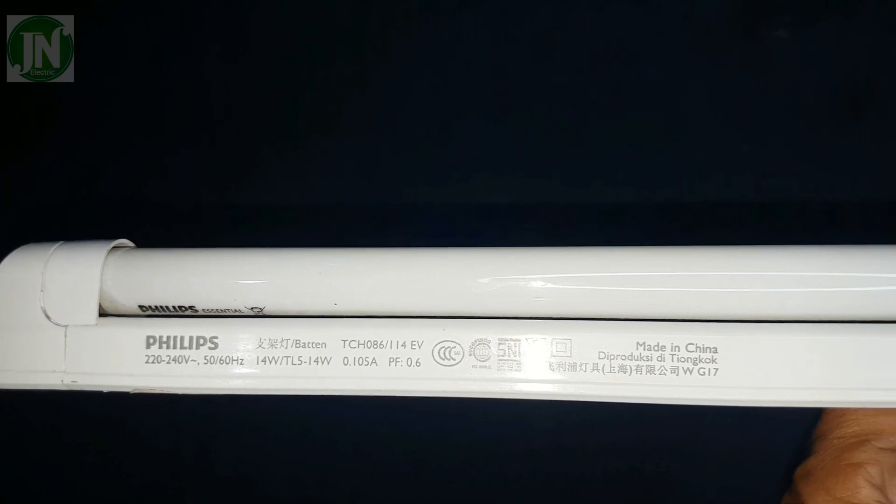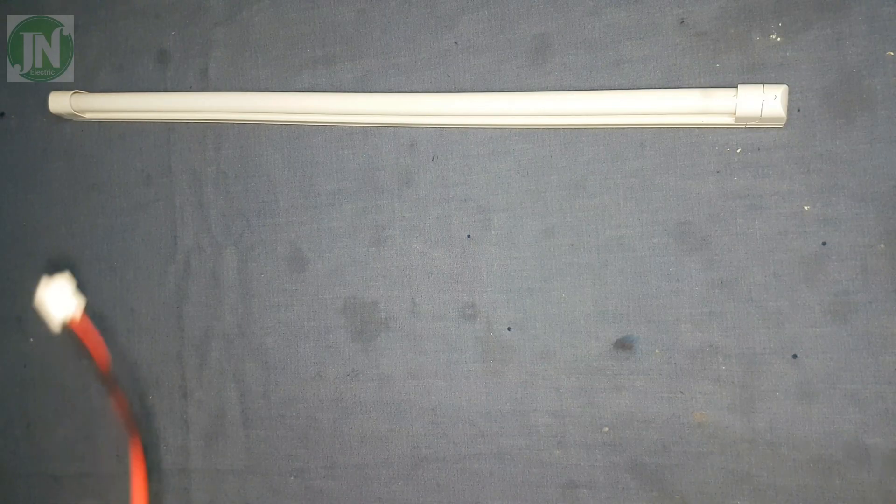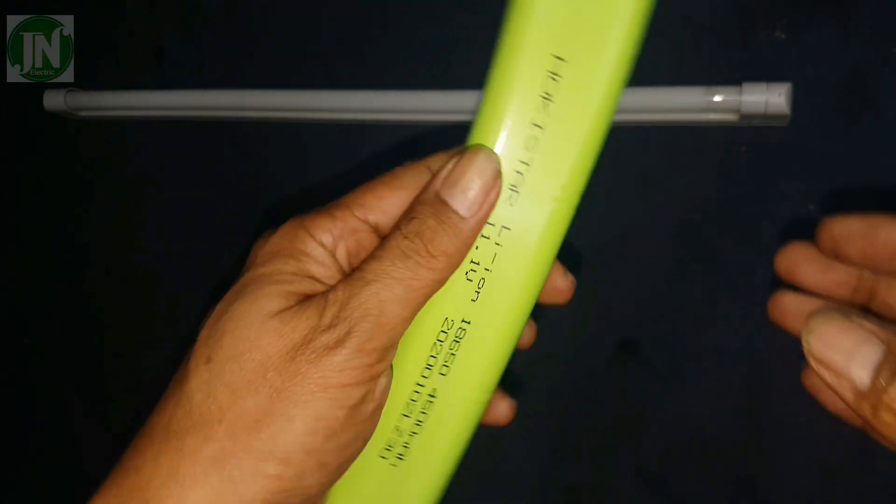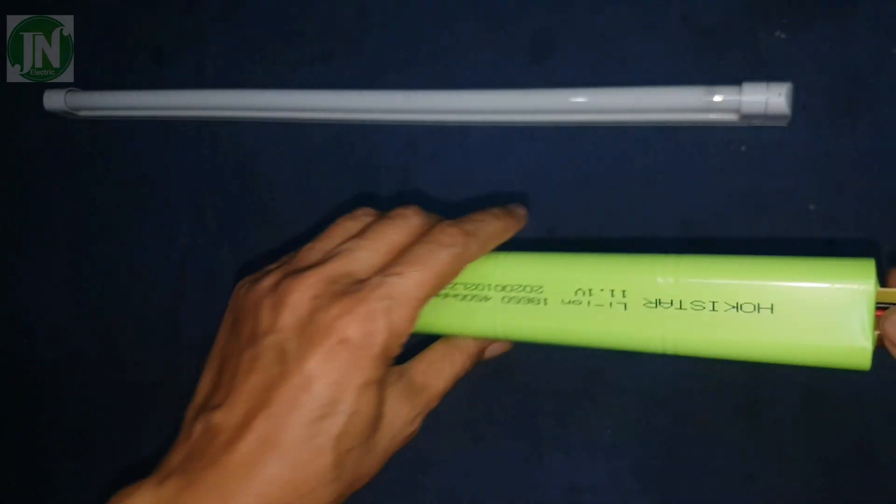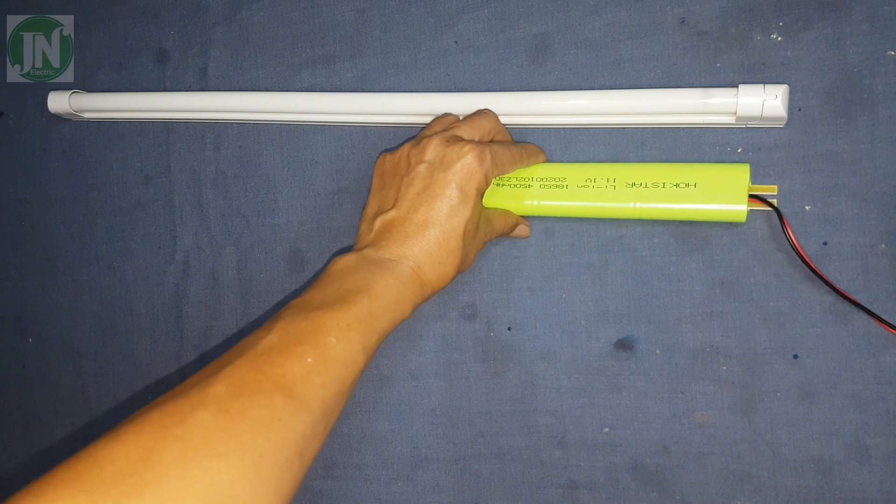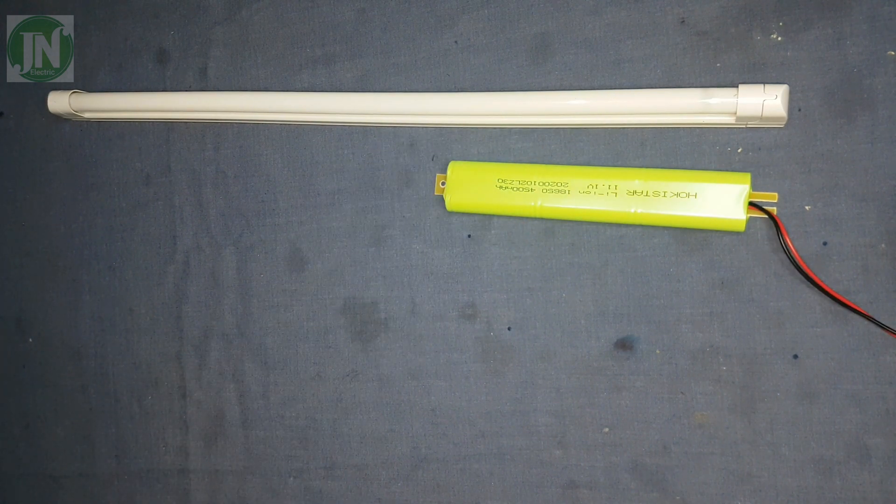Let's look at the LED lamp, which has a capacity of 14 watts with a working voltage of 220 to 240V AC.